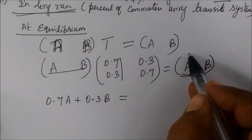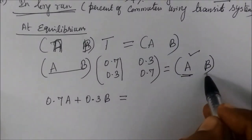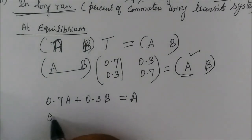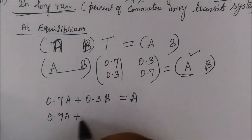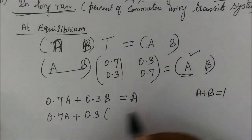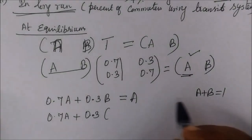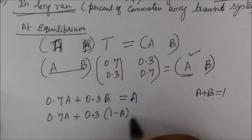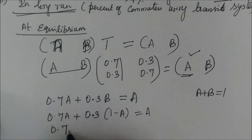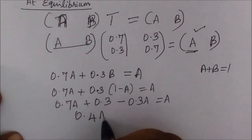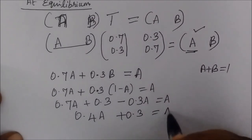First row, second column — we go here. Here is variable 'a'. We have the calculation: 0.7a plus 0.3 equals a. This formula uses a plus b equals 1. Why? Because the sum of the probabilities is equal to 1. So 1 minus a equals b. Therefore: 0.7a plus 0.3 minus 0.3a equals a, which gives 0.4a plus 0.3 equals a.